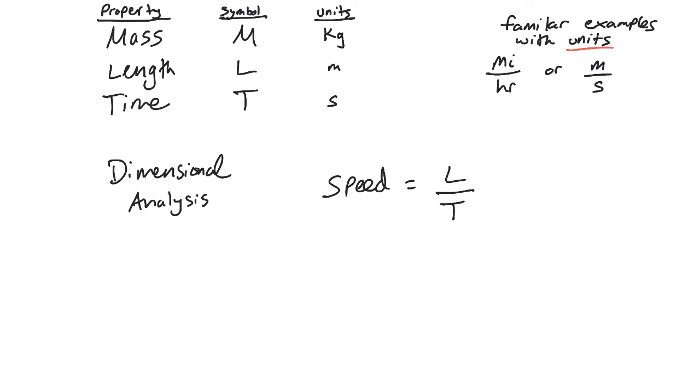Alright, so hopefully you got it. It's pretty easy. Some familiar examples you might have thought of would be miles per hour or meters per second. Both are representations of how fast something's going. Notice though that I constructed those by thinking about familiar units I'm used to working with in the real world.